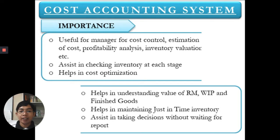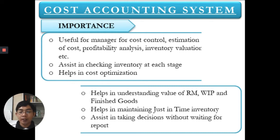It helps in understanding the value of your raw material, work in process, and finished goods. Depending on the costing system used by the company, you will determine what amount of cost contributes a greater portion to your product. It also helps in maintaining just-in-time inventory, wherein you only order raw materials when they are going to be used in production, minimizing your raw materials inventory.